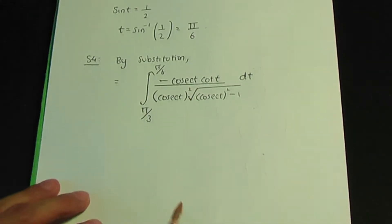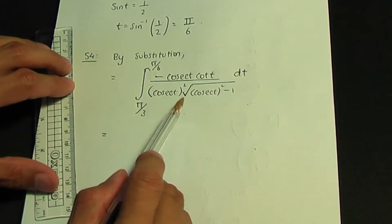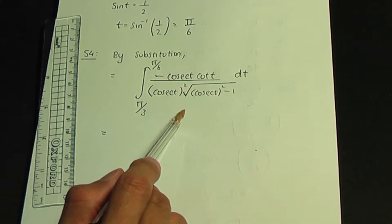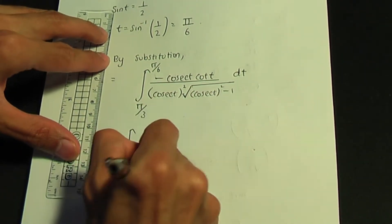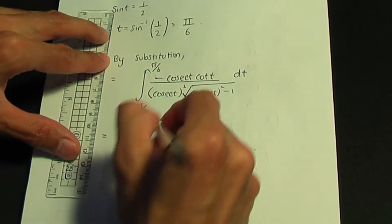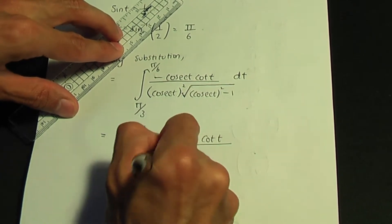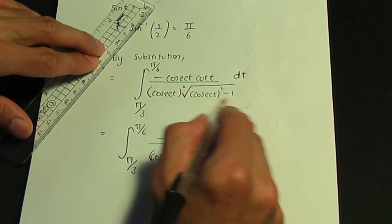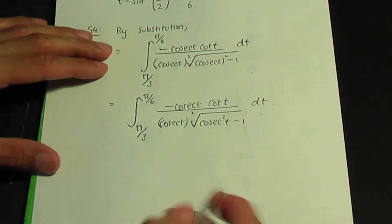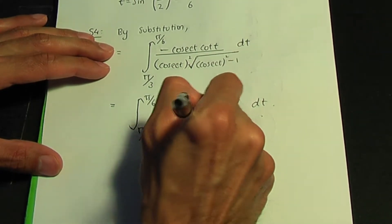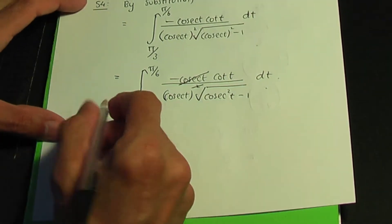We've replaced everything. Now let's simplify — remember we'll be using a trigonometric identity at some stage. The integral from π/3 to π/6 becomes minus cosec t cot t over cosec squared t times the square root of cosec squared t minus 1. We can cancel one cosec from the numerator with one from the denominator, leaving cosec t in the denominator.